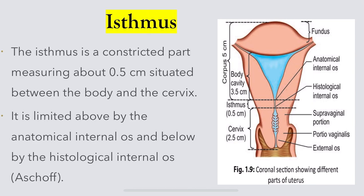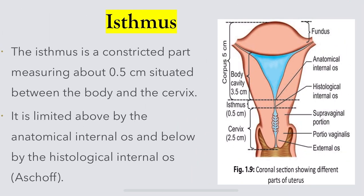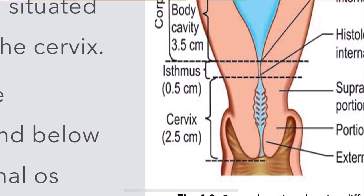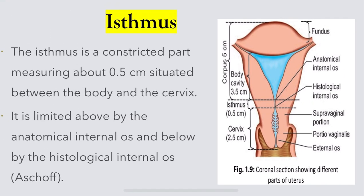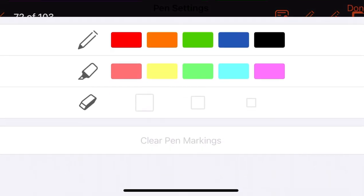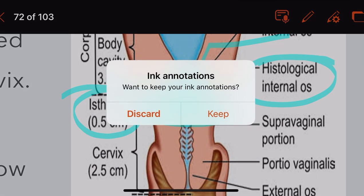The isthmus is a constricted part measuring about 0.5 cm, situated between the body and cervix. It is limited above by the anatomical internal os and below by the histological internal os.